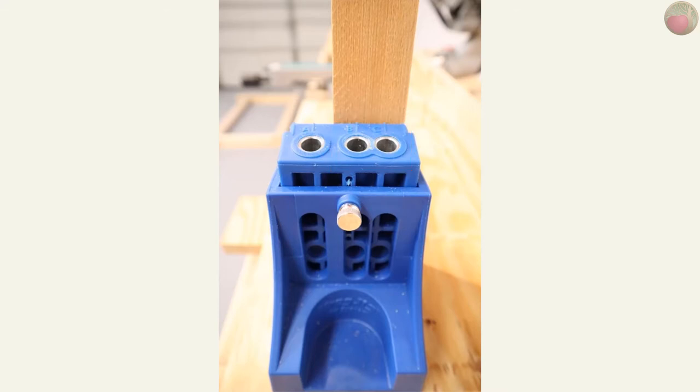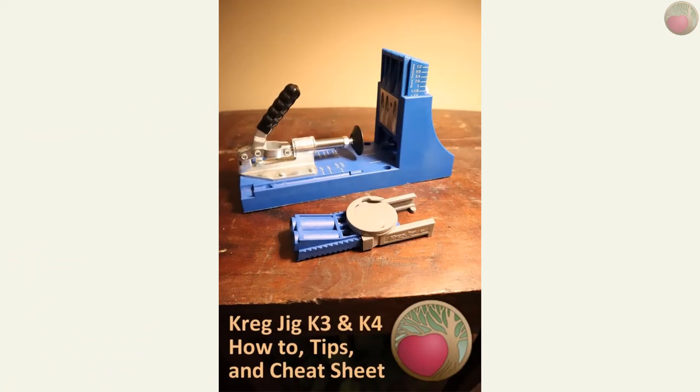But considering how cracked and such 2x2s can be, you can get away with using just one pocket hole in the center of the wood. I centered mine in the B hole of the Kreg jig. Set your jig and bit to the 1.5 inch mark and use 2.5 inch screws. And you can see my post on the Kreg Jig K3 and K4 how-to cheat sheet and tips for more.